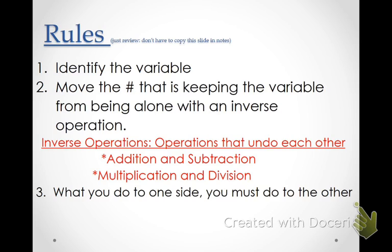We also talked about this yesterday when we were talking about equations. The rules are the same for equations as they are for inequalities. The first thing you have to do is identify the variable. The variable is a letter — any letter of the alphabet. So you figure out what the variable is. Then step number two: move the number that's keeping the variable from being alone with an inverse operation. Our goal is to get the variable by itself.